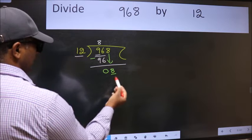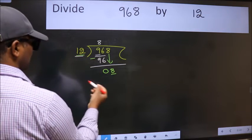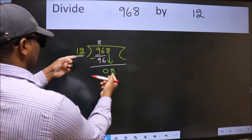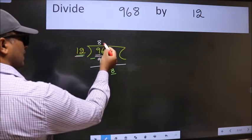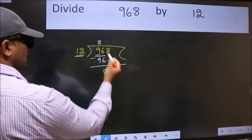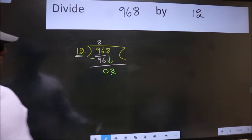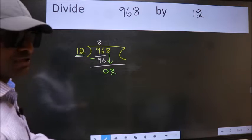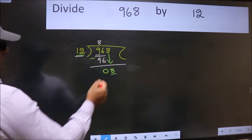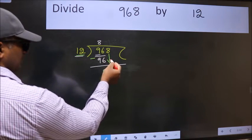Here we have 8 and here 12. 8 is smaller than 12, so what many do is they directly put dot, take 0, which is wrong.